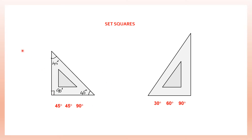We have the second type of set square which has angles of 30 degrees, 60 degrees, and also a 90 degree angle. You can use one of these set squares or both in combination if you need to get a particular angle.